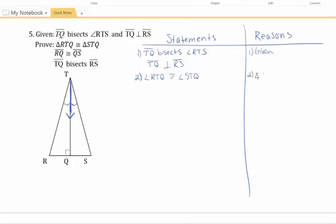and the reason being an angle bisector creates two congruent angles. You can write that in any way you want, as long as it says something about a bisector splitting an angle in half, making two congruent angles. You're covered.